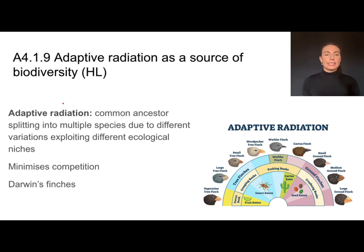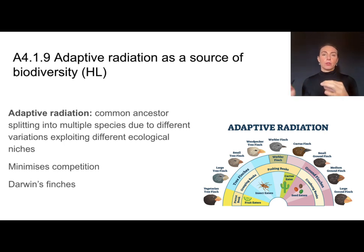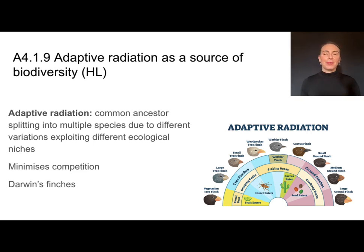This is what we call adaptive radiation — a common ancestor diverging into several different species due to different variations exploiting different ecological niches. In this case, the ecological niche was the food source, and the different variations were the different beak shapes. A wonderful example of adaptive radiation, and probably the one I would remember.